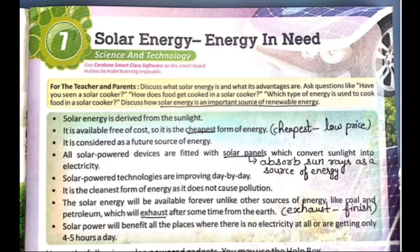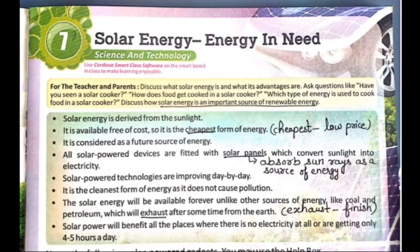Solar energy is derived from sunlight. Second point: it is available free of cost - we don't need to pay money for it, so it is the cheapest form of energy. Next: it is considered a future source of energy. All solar-powered devices are fitted with solar panels which convert sunlight into electricity.